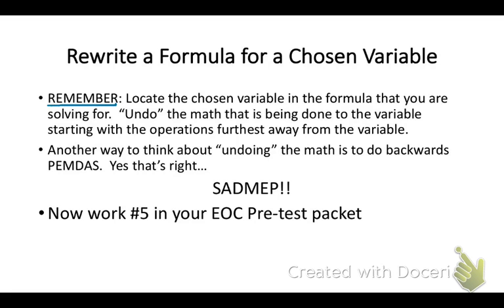The first topic we'll look at is rewriting a formula for a chosen variable. Remember, you're going to locate the chosen variable in the formula that you are solving for. You're going to undo the math that's being done to the variable, starting with the operation furthest away from the variable. Another way to think about undoing the math is PEMDAS backwards. That's right, SADMEP. So undo the subtraction or addition first, then multiplication or division next, then exponents, and finally parentheses.